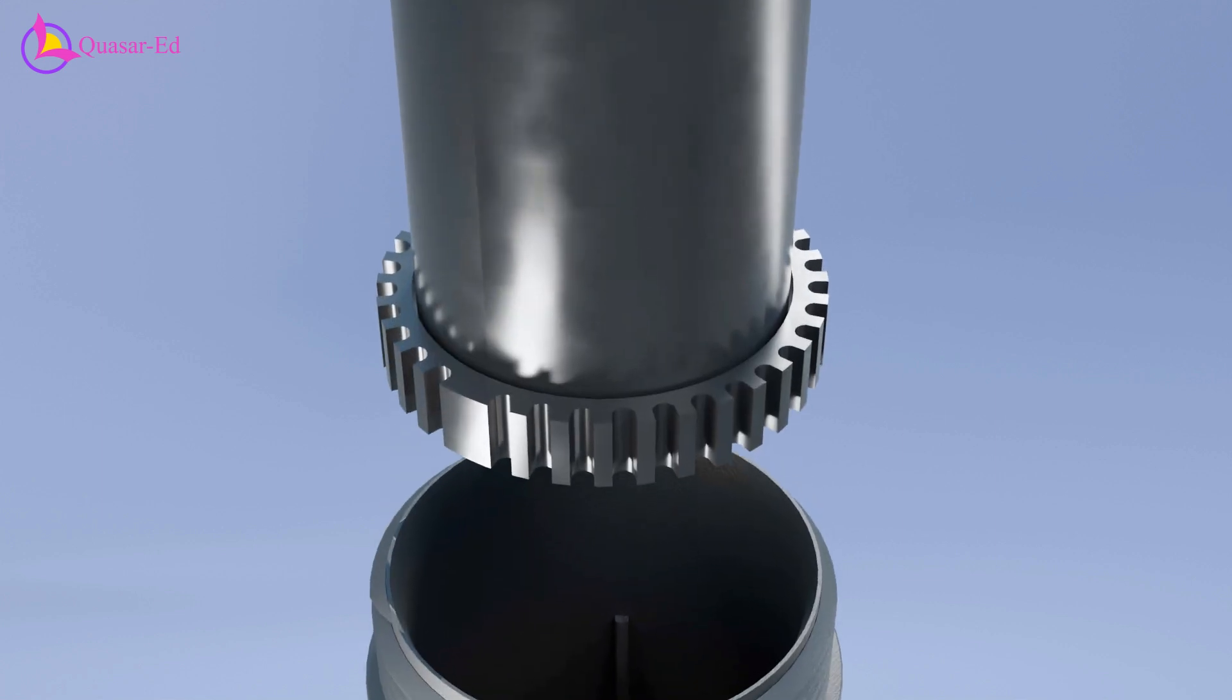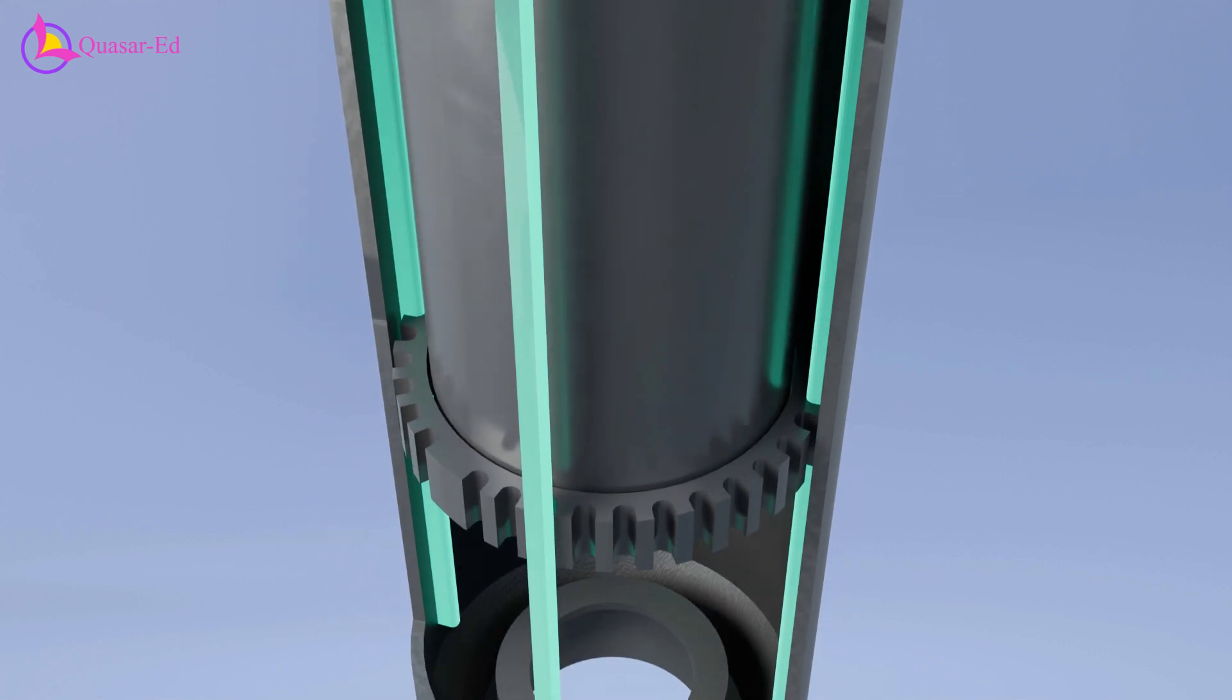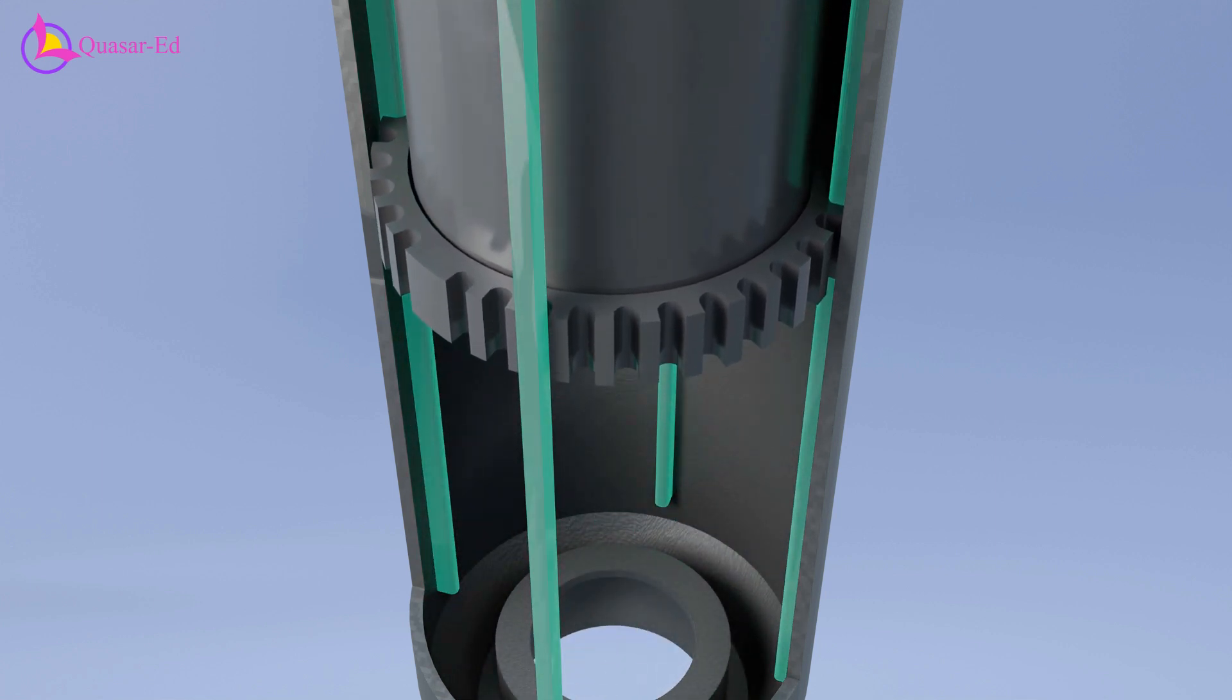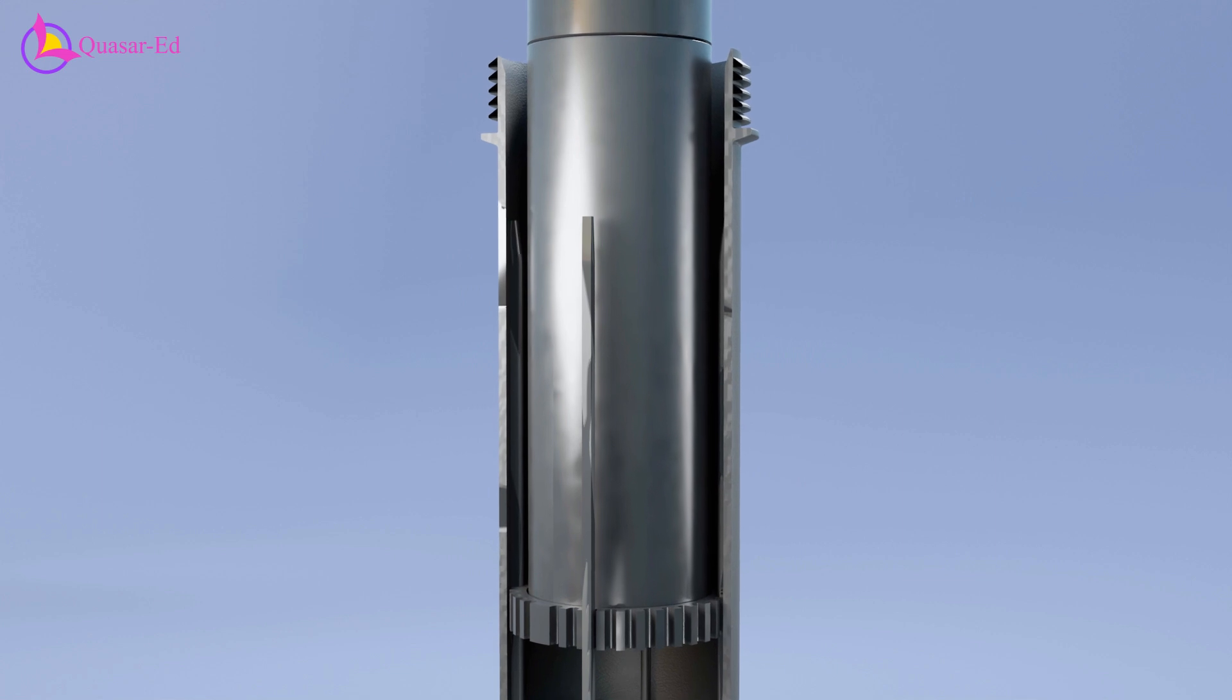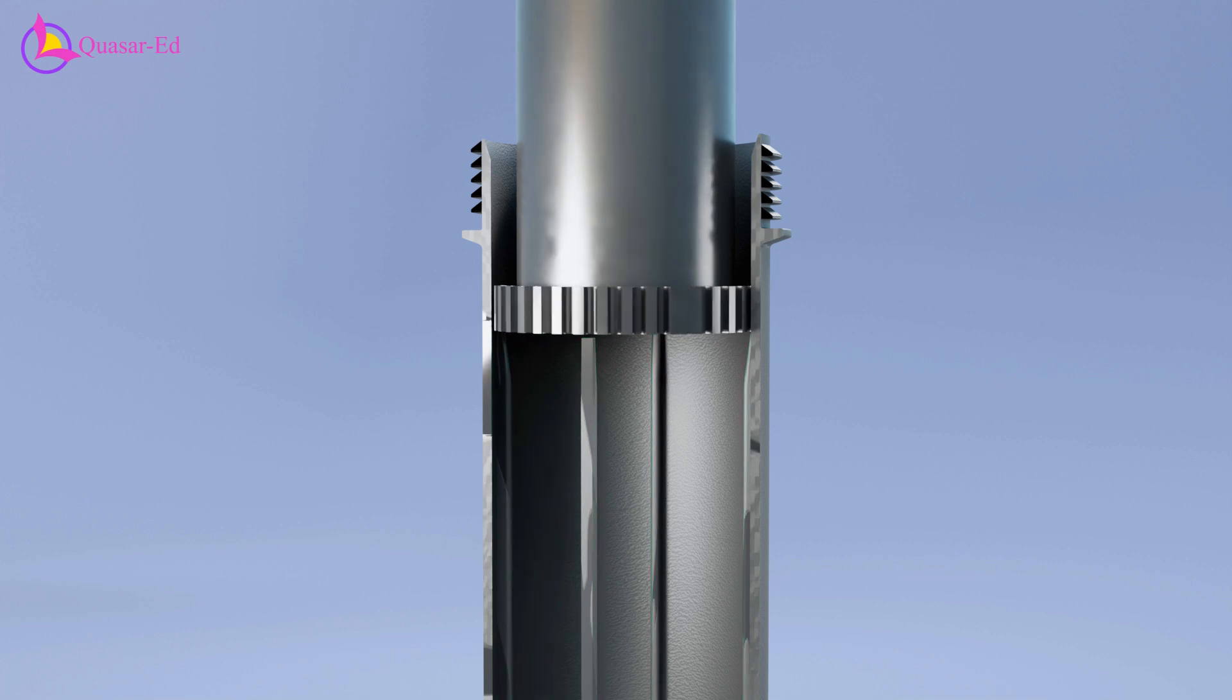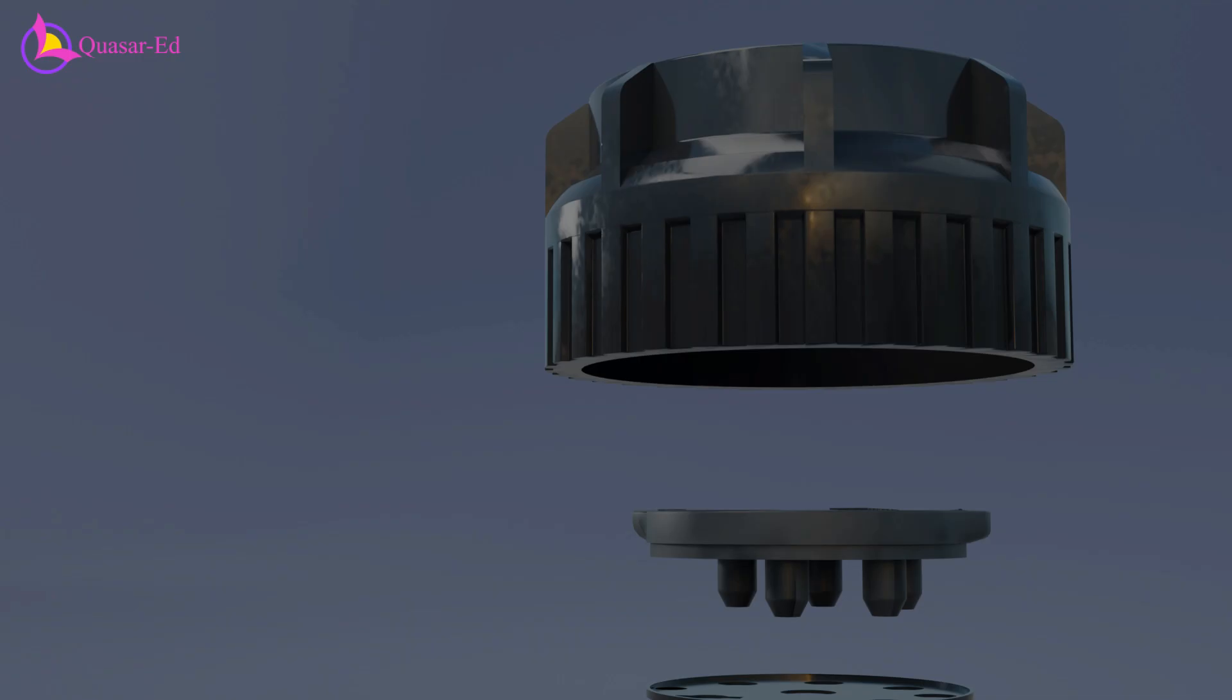The gear-like base of the inner stem slides along the four ridges of the sprinkler body, allowing the stem to move up and down but not rotate. To rotate the stem, you must pull it up until it disengages from the four ridges, and then you can rotate it to the desired direction.